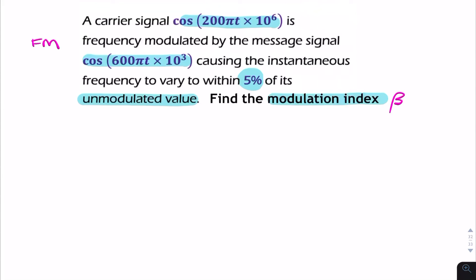So to find beta, what we need is two things. We need to find the frequency deviation, or the maximum frequency deviation, and we need to find the message bandwidth. So we want to find the ratio of those two things.